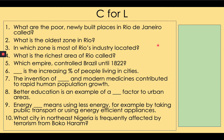Number one: what are the poor newly built places in Rio de Janeiro called? They are favelas. Two: what is the oldest zone in Rio? It's the central zone. Three: in which zone is most of Rio's industry located? The north zone. Four: what is the richest area of Rio called? Barra da Tijuca. Five: which empire controlled Brazil until 1822? Portugal.